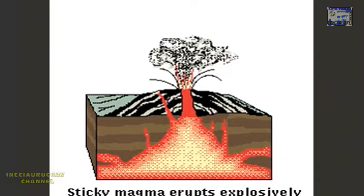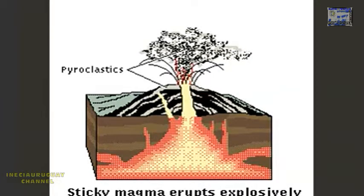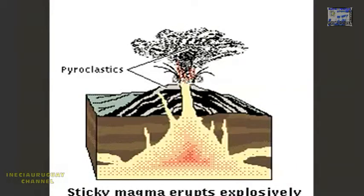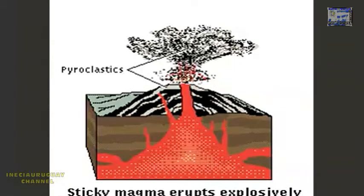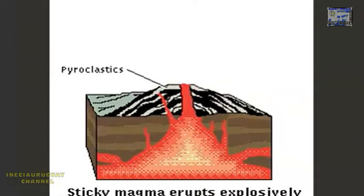Hot debris particles, called pyroclastics, are expelled during violent explosions. Heavier pieces land near the crater and serve to build the cone-shaped mountain. Lighter pieces can be carried by the wind for hundreds of miles.